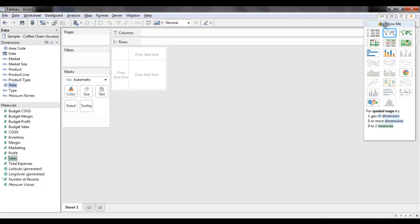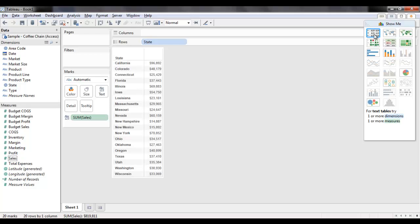Tableau is smart enough to show the type of visualization that would go with the selected dimensions and measures. For example, with the State dimension and Sales measure, you can select the Text Table View. This will show the data in a simple tabular format.